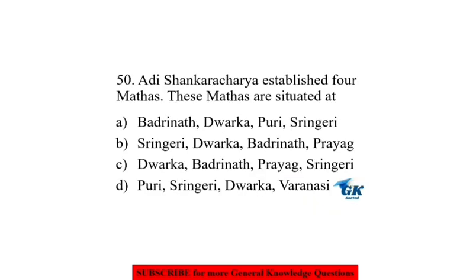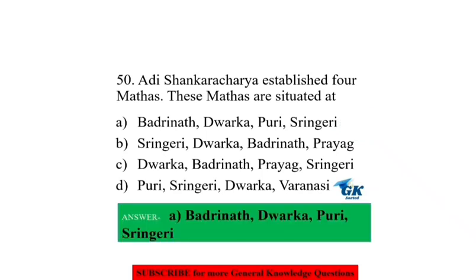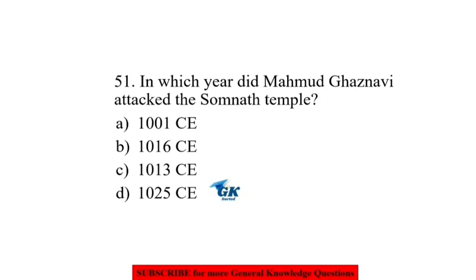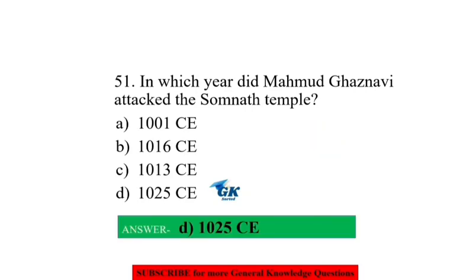Adi Shankaracharya established four mathas. These mathas are situated at Badrinath, Dwaraka, Puri, and Shringeri. In which year did Muhammad Ghaznavi attack the Somnath temple? 1025 CE.